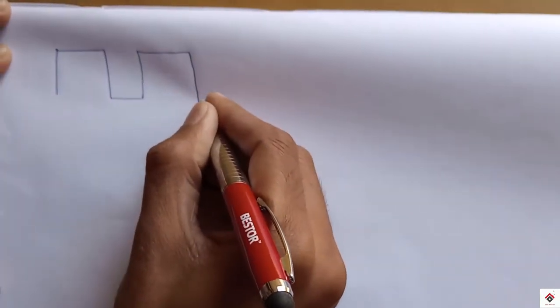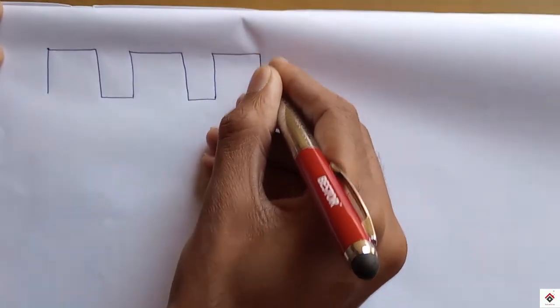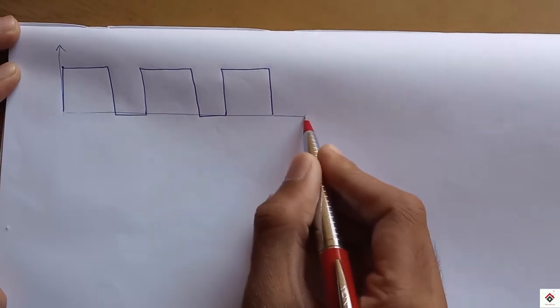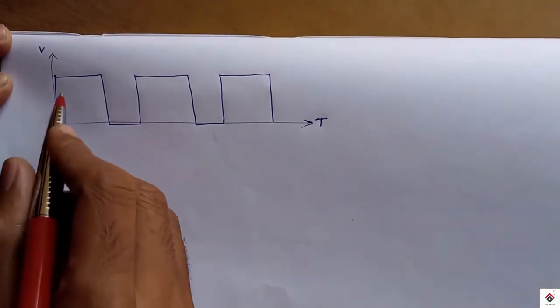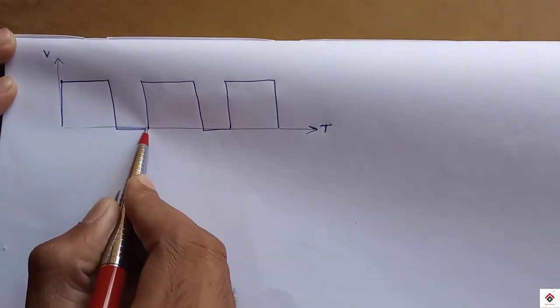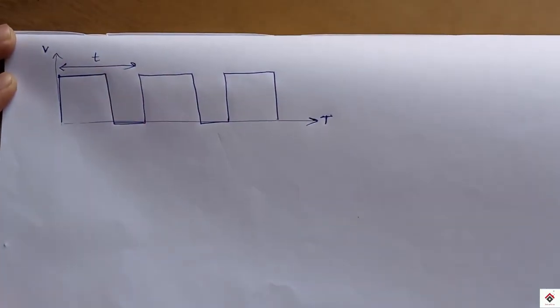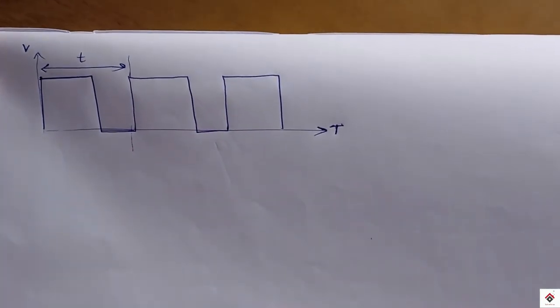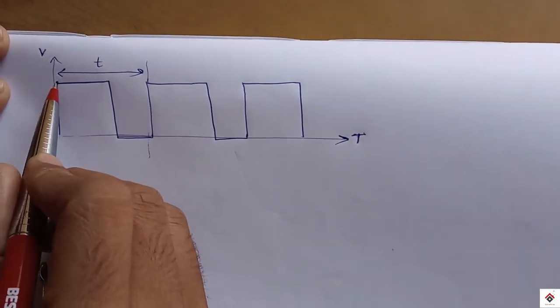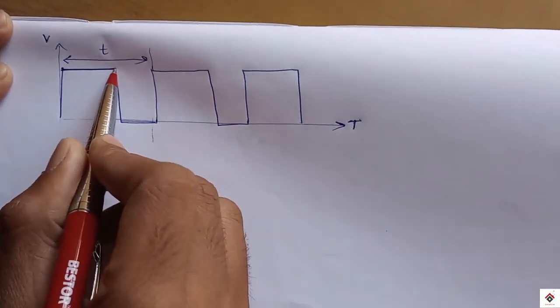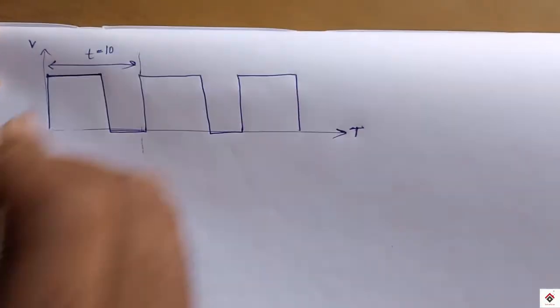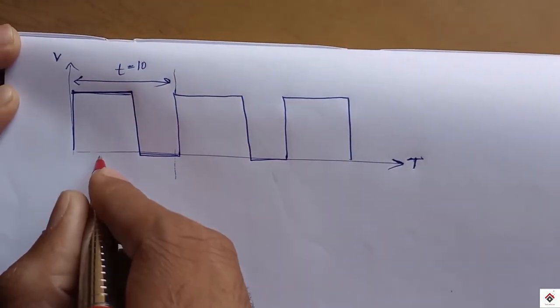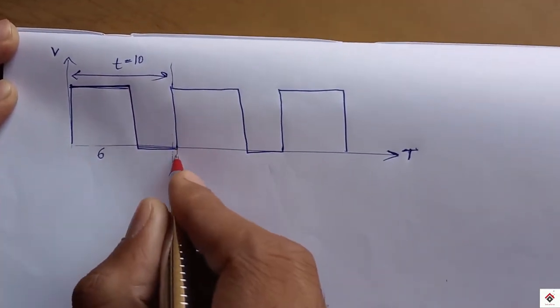So if we consider a waveform, this will be the time axis and this will be the voltage axis. So one high and one low will be the one time period. So we will have to concentrate only on for which the wave will be at higher part. So consider the time period will be 10 millisecond. So in that the high part is approximately 6 millisecond and the lower part will be 4 millisecond.